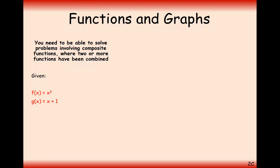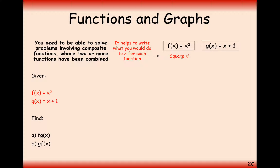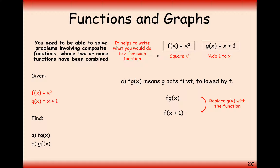So let's have a look at a couple of questions. We've got f(x) = x² and g(x) = x + 1, and we are asked to find fg(x) and gf(x). It's sometimes nice to think of the function as squaring the value and adding 1 onto the value of x — not just algebraically, but to think about what is happening to any numbers replaced with x. Finding fg(x) means g acts first, so we replace the g(x) with x + 1. When we apply the g function of adding 1 to x, we get x + 1. So that's why the x inside the bracket has turned into x + 1 — it's just had the g function applied to it.